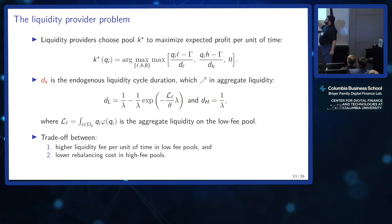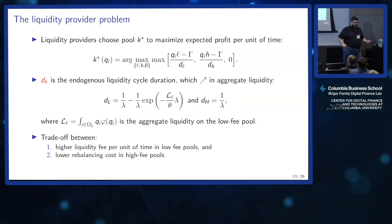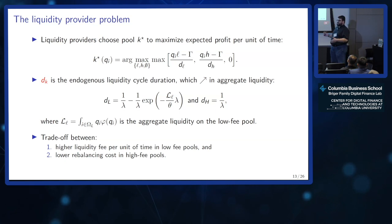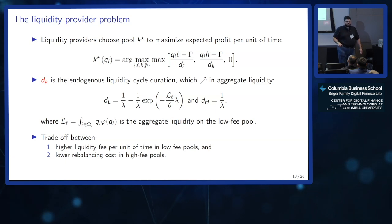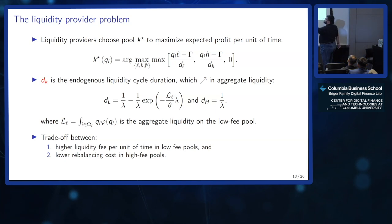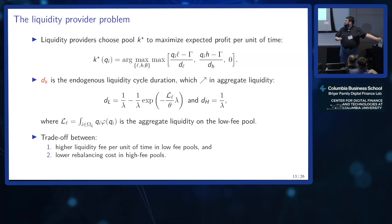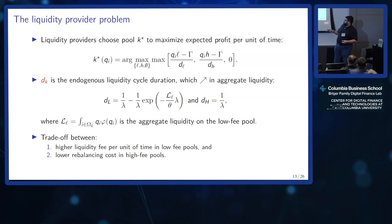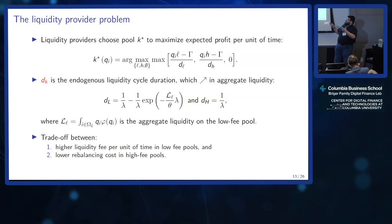The only endogenous variable is the duration of the cycle, which depends on how many other people provide liquidity, since everything is pro rata. For the high-fee pool, liquidity only gets depleted when the big trader comes, so the duration is the expected inter-arrival time of the Poisson process. For the low-fee pool, duration is shorter because you also have the continuous small-trader flow. There's a trade-off: the low-fee pool pays less per cycle but cycles are more frequent; the high-fee pool pays more but less often, and you also save on gas fees.